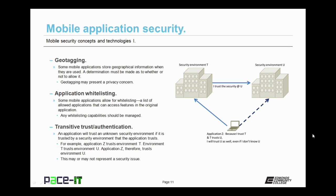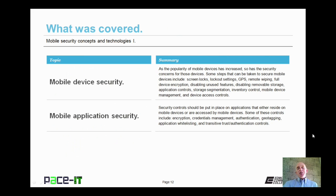Then there are transitive trust, or transitive authentication, issues. With transitive trust, an application will trust an unknown security environment if it is trusted by a security environment that the application already trusts. For example, application Z trusts environment T. Environment T trusts environment U. Therefore, application Z will trust environment U. This may or may not represent a security issue, but it should always be examined.